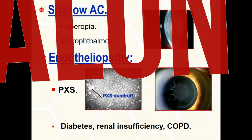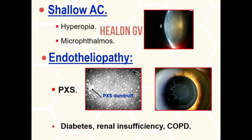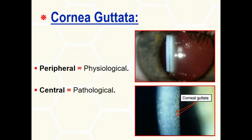Hyperviscous viscoelastic — for example, Healon GV — may help deepening of the anterior chamber. Pseudoexfoliation is characterized by a tetrad of zonulopathy, iridopathy, corneal endotheliopathy, and glaucomatous optic neuropathy. Diseases such as diabetes mellitus, renal insufficiency, and chronic obstructive pulmonary disease are associated with endothelial dysfunction. Peripheral cornea guttata is an aging endothelial change. When the guttae are present on the central cornea, it is pathologic and is an early sign of Fuchs corneal dystrophy.